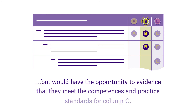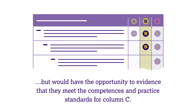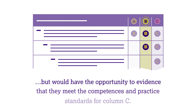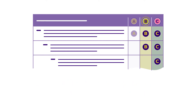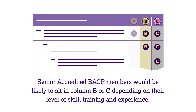Accredited BACP members would typically sit in Column B, but would have the opportunity to evidence that they meet the competencies and practice standards for Column C. Senior accredited BACP members would be likely to sit in Column B or C, depending on their level of skill, training, and experience.